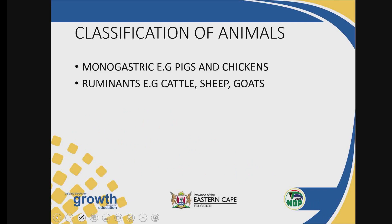Now, classification of animals. We've got the animals that we keep on farm — for example, cattle, sheep, goat, pig, and chicken. These animals are classified or categorized according to ruminants and non-ruminants. The example of monogastric animals are pigs and chicken. The example of ruminant animals are cattle, sheep, and goats. One would wonder — how do we classify these two types of animals? These animals are classified based on the structure of their stomachs.